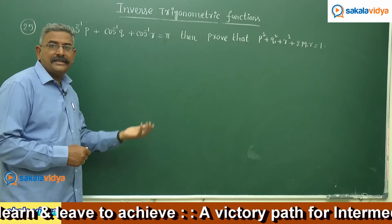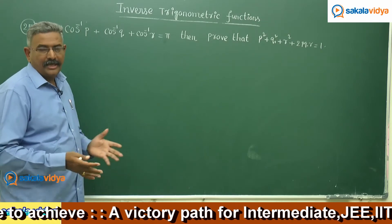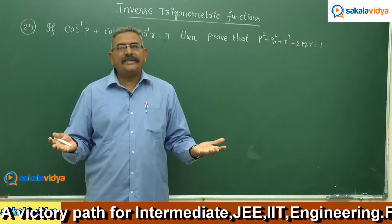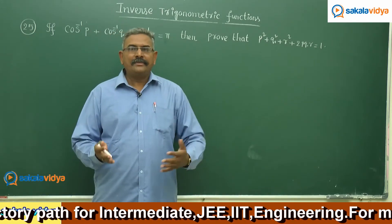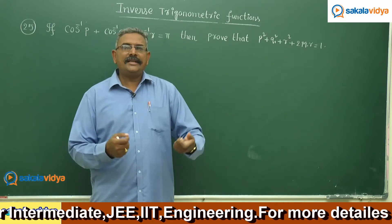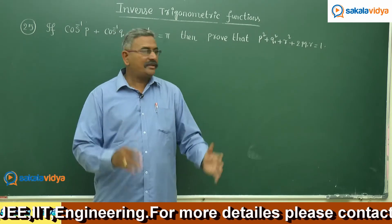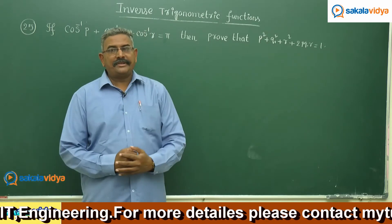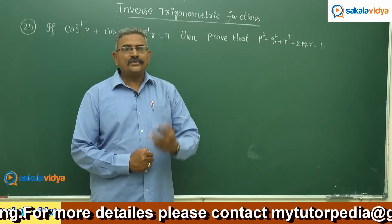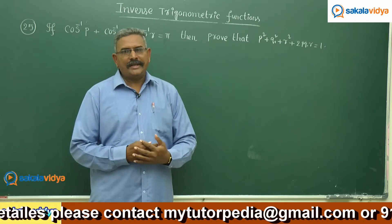So a + b + c = π, which means a + b = π − c. Applying the cosine function on both sides, cos(a+b) = cos(π−c). Expanding: cos a cos b − sin a sin b = −cos c. Here, the respective cos a, cos b, and cos c values in terms of p, q, r will be written, and after simplification we get p² + q² + r² + 2pqr = 1.